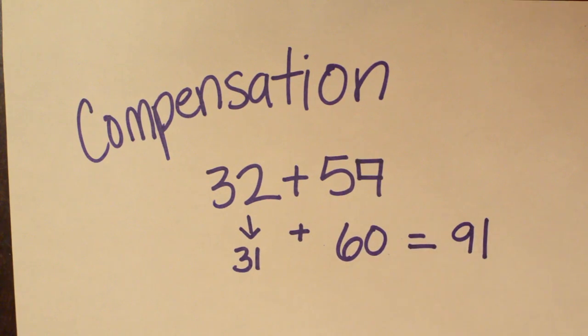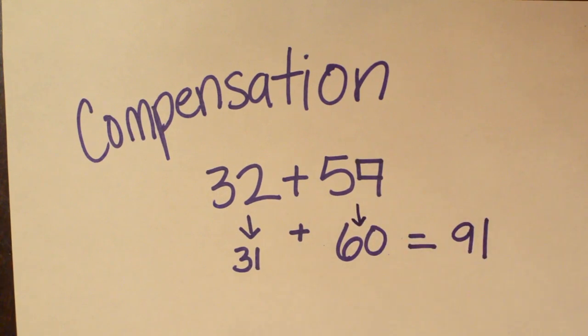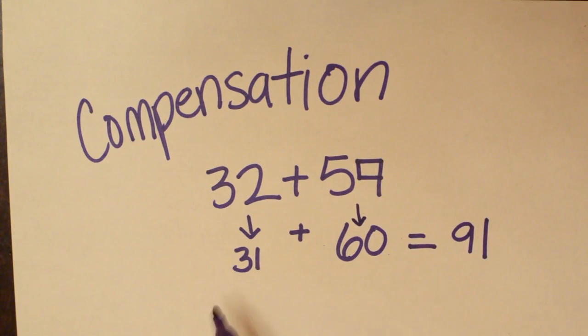They know they're going to make the 9 a 60, and then they're going to have to adjust for having done that. And they can take one away from the 32 and get 31, so they have 31 plus 60 is 91. So those are five ways to think about teaching your children how to add within 100 using two-digit numbers.